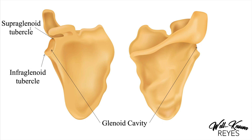You should also see the supraglenoid and infraglenoid tubercles. Supra means above, so we have the supraglenoid tubercle and the infraglenoid tubercle. These are going to be some of the sites where arm muscles originate, which we will discuss in other videos. For now, this is the glenoid cavity.